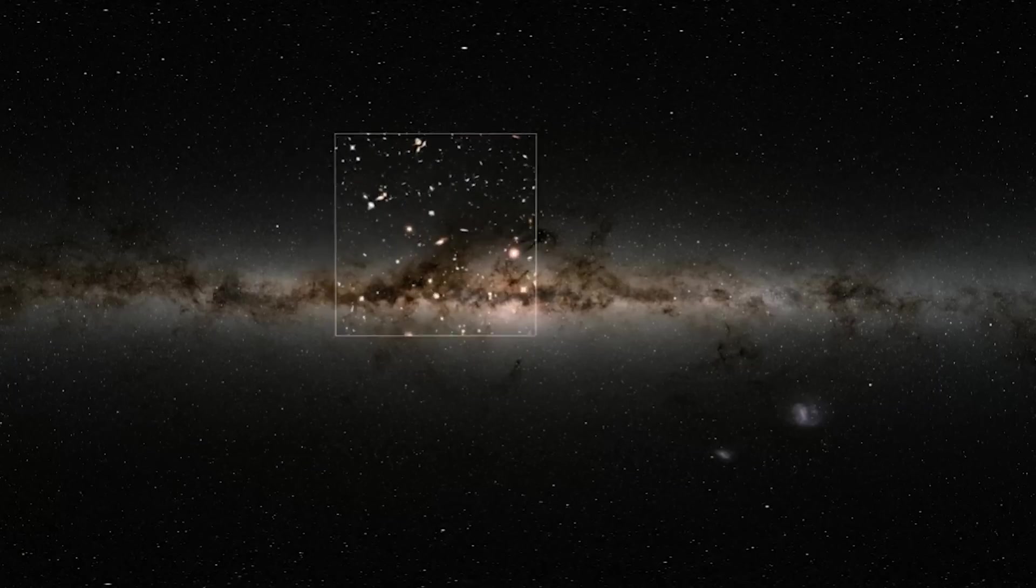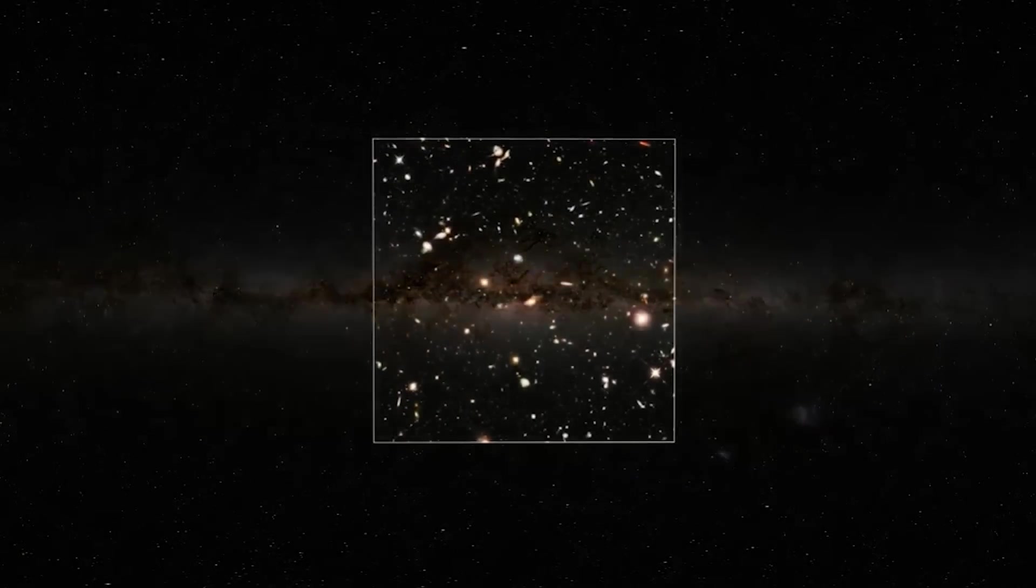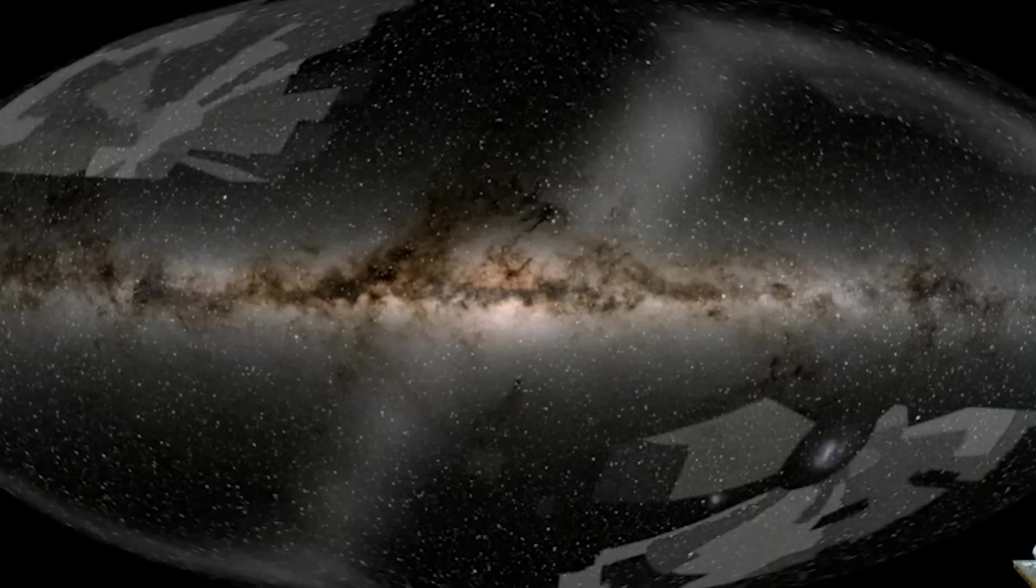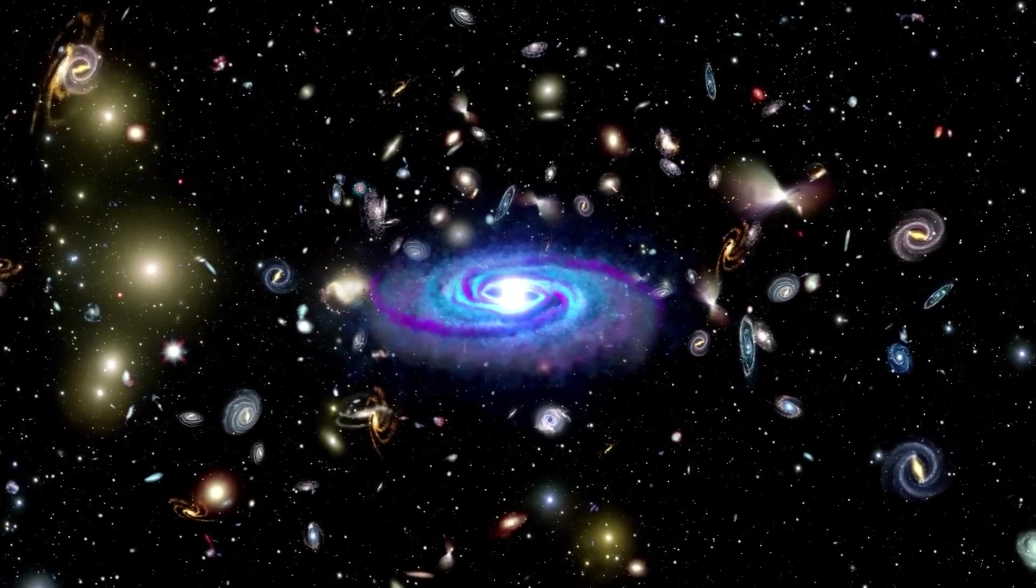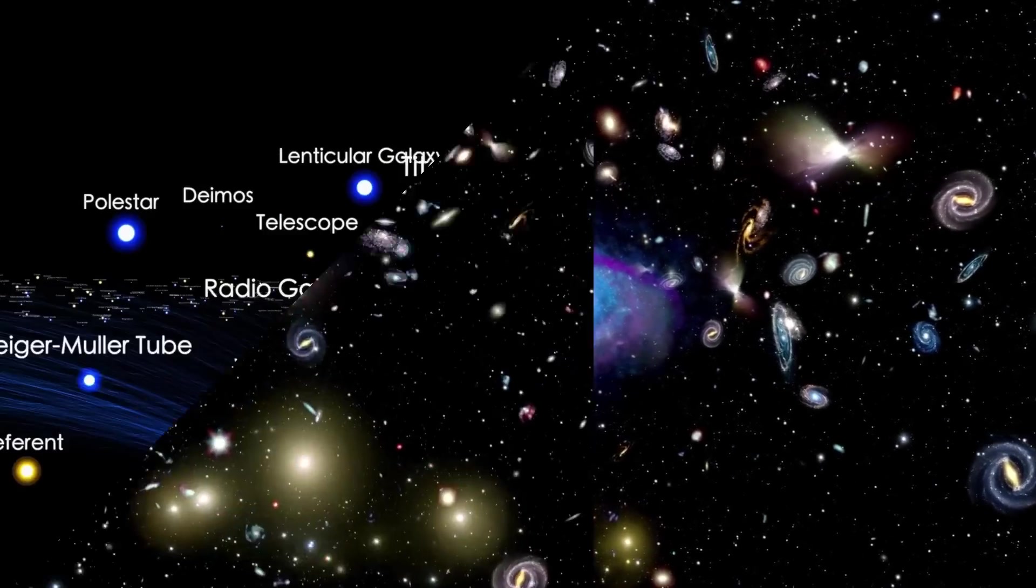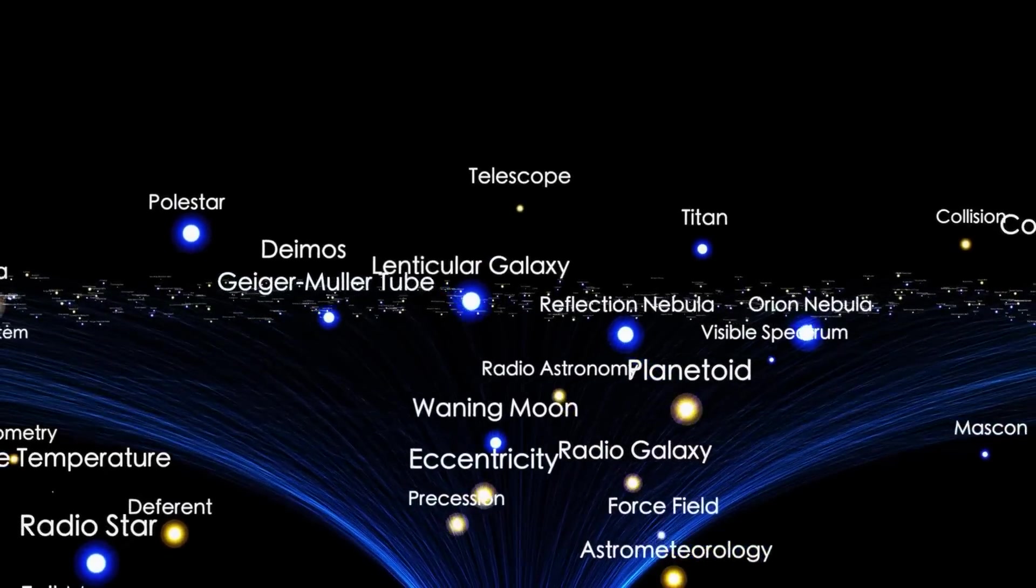Even more fascinating is that Euclid can detect dark matter and dark energy, two elusive phenomena that can't be detected directly. According to astrophysicist Jason Rhodes, the shapes and positions of galaxies hold the key to understanding these mysteries. Exciting times lie ahead in the world of astronomy.